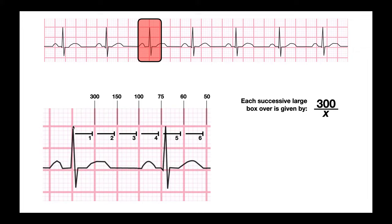Each successive large box over is given by 300 over x. If I go one big box over it's 300 over 1, which is 300. If I go two big boxes it's 300 over 2, which is 150. If I go a third big box it's 300 over 3, which is 100. You can do this over and over. 300 over 4 is 75. 300 over 5 is 60. 300 over 6 is 50. If you had to go further you could do 300 over 7. You can keep going if need be, though that would be a very slow heart rate.